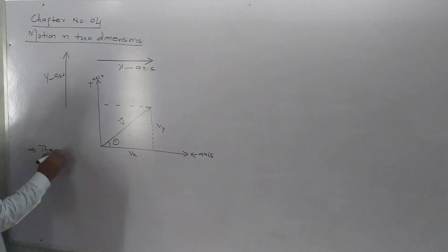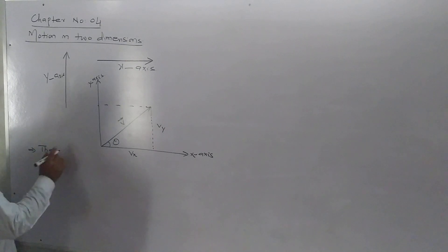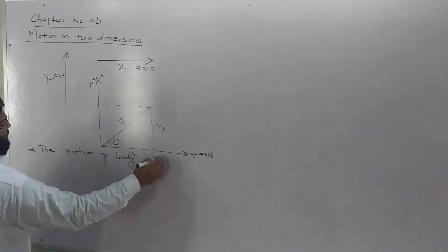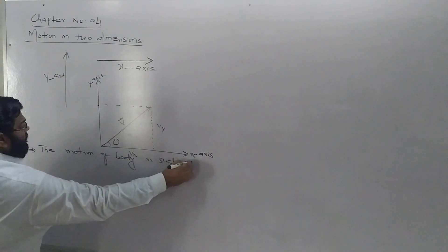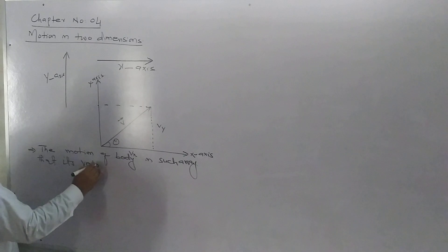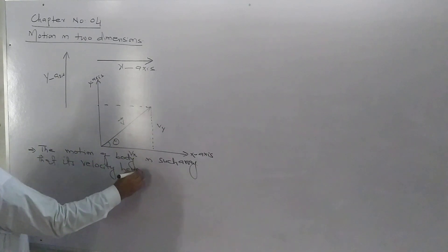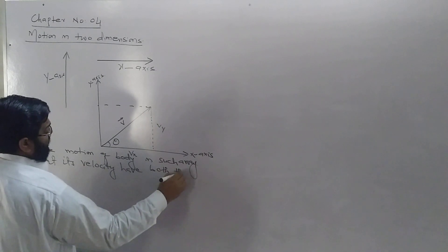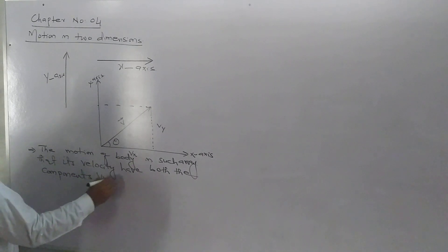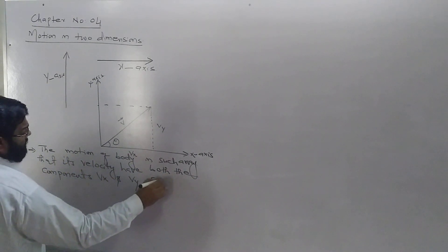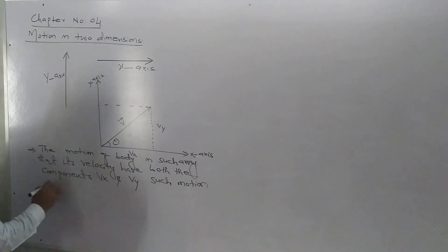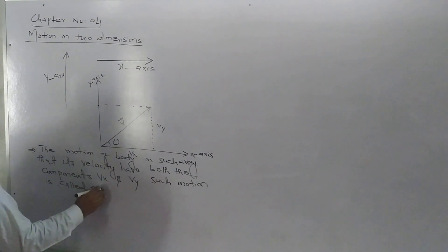We resolve the motion of a body in two dimensions in such a way that its velocity has both components — the x-axis component and the y-axis component. Such motion is called motion in two dimensions.